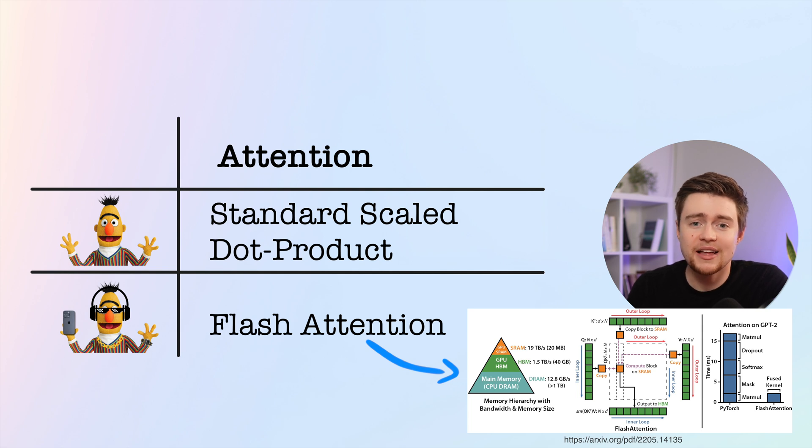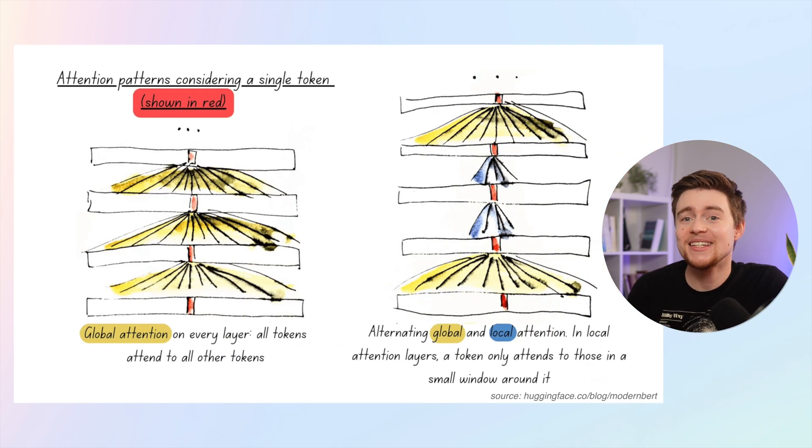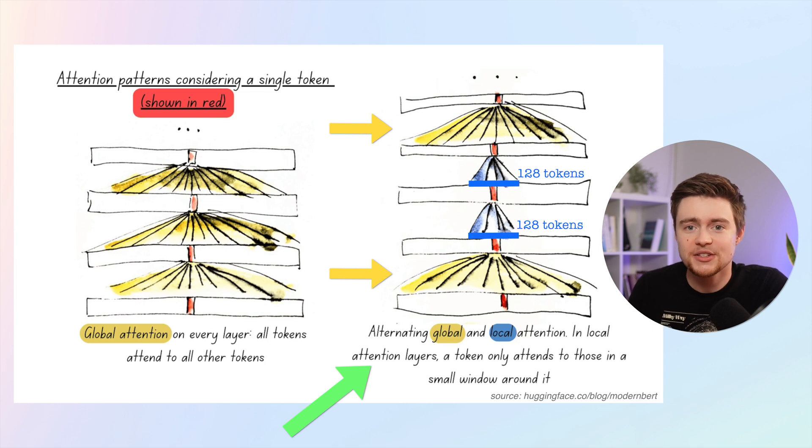But there is more. Modern BERT also uses a neat trick to be even more efficient. Instead of using global attention on every layer of the neural net, which would be slow because then all tokens would have to attend to all other tokens on the previous layer, Modern BERT alternates global and local attention. Global attention is applied only every third layer, and the other remaining layers use a sliding window where each token attends only to the 128 tokens around it.